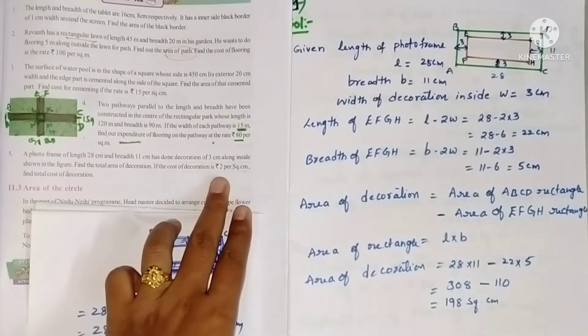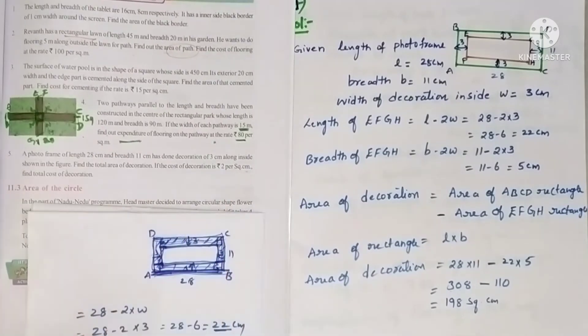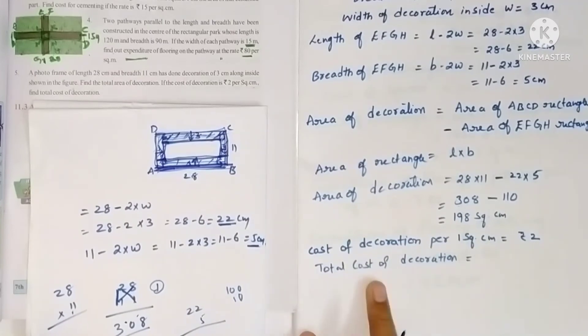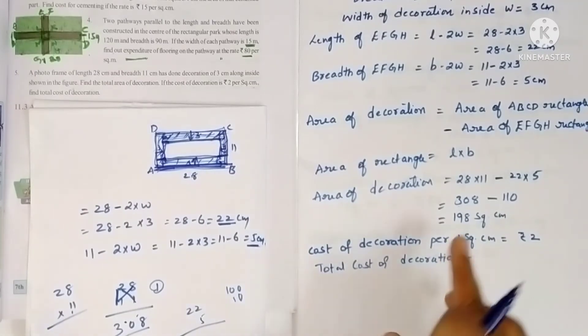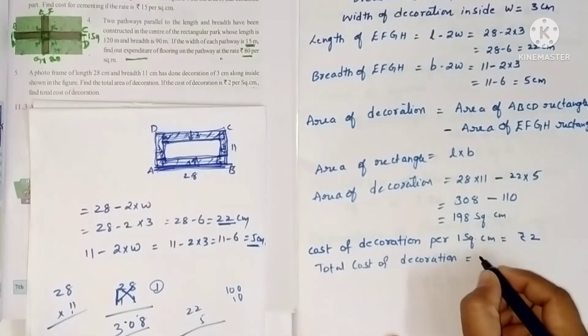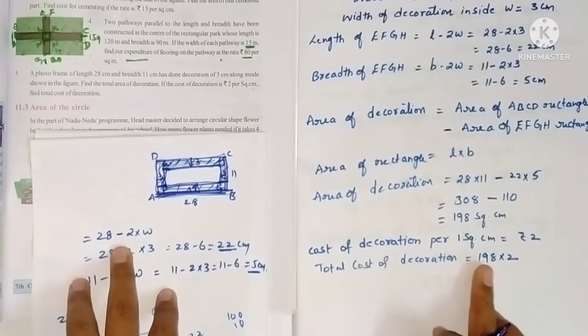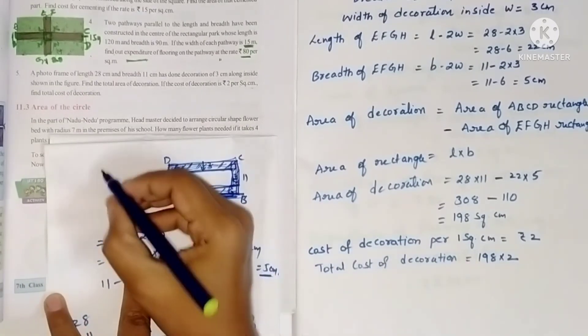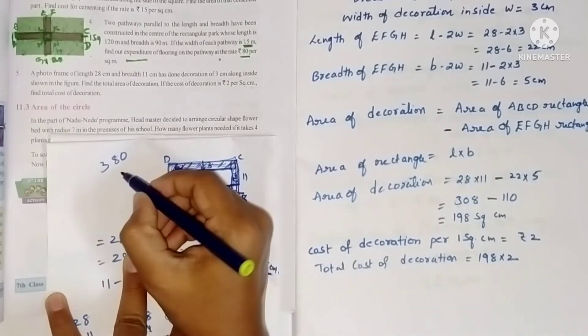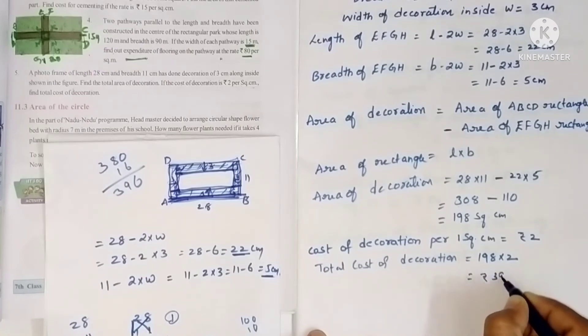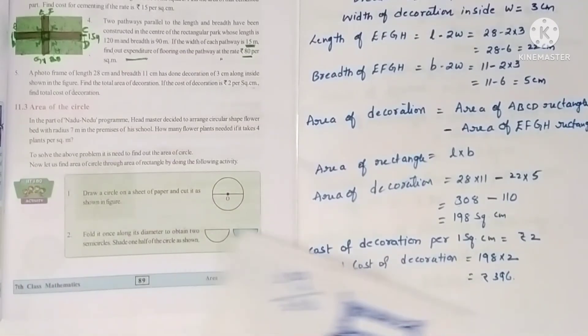Now the cost of decoration per one square centimeter is 2 rupees. So cost of decoration per one square centimeter rupees 2. Now total cost of decoration. Total cost means total area 198, so 198 into 2. Students, simply you have to calculate the calculations. See here 19 twos are 38, that means 19 twos are 380, and 2 eights is 16. So it is total 396 rupees, 396. So total cost of decoration will be 396 rupees.